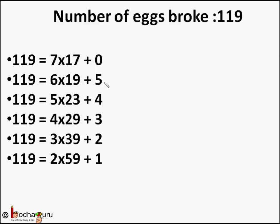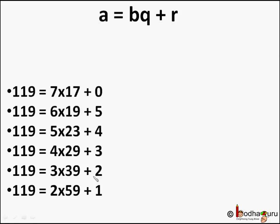And the quotient and remainder pair remains unique every time. So if we denote the dividend by a — that is, the total number of eggs — the divisor by b, the quotient by q, and the remainder as r,